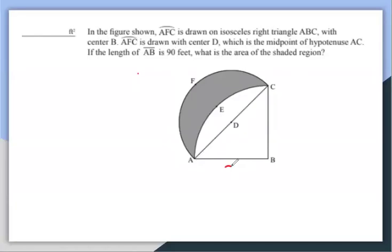AB is 90 feet. Okay, so we are given this is 90 feet. That means BC is also 90, and we want to find this shaded region.